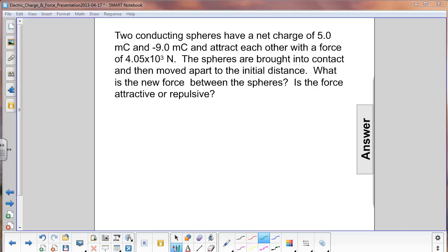Two conducting spheres have a net charge of 5 millicoulombs and negative 9 millicoulombs, and they attract each other with a force of 4.05 times 10 to the 3rd newtons. They are brought into contact and then moved apart to the initial distance. What is the new force between the spheres, and is this force attractive or repulsive?